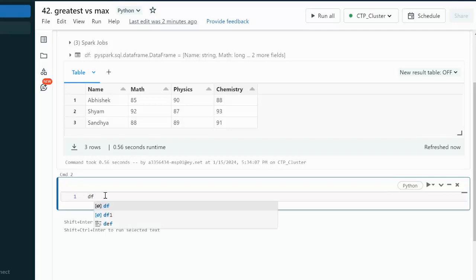Let me use df.select and after that, first let me try to add the value for these three columns for getting the total max. For that we can use df.math plus df.physics plus df.chemistry.